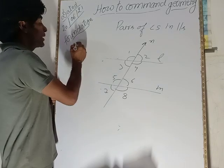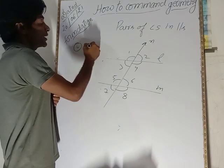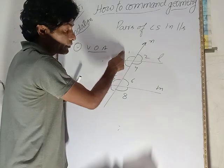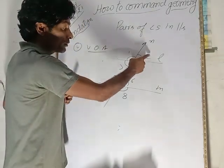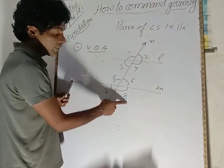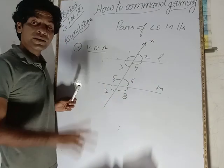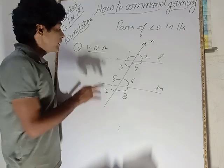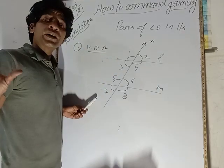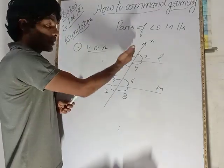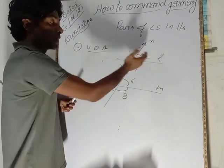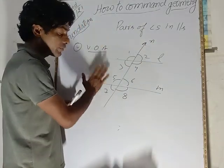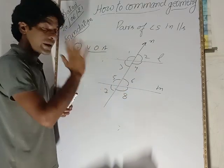The fifth pair is vertical opposite angles. The four pairs are: angle 1 and angle 4, angle 2 and angle 3, angle 5 and angle 8, and angle 6 and angle 7. The characteristic property is that vertical opposite angles are equal: angle 1 = angle 4, angle 2 = angle 3, angle 5 = angle 8, and angle 6 = angle 7.